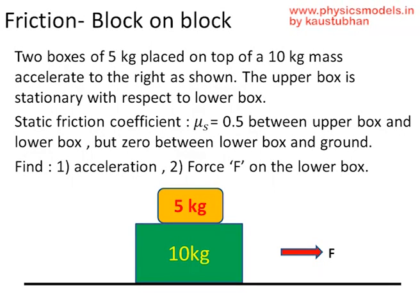In this video I'll explain a tricky problem involving Newton's laws of motion, free body diagrams and friction. We have the problem on screen: a box is sitting on another box and there is a force F pulling the lower box towards the right, dragging the upper box along with it. There is no relative motion between the upper and lower boxes, static friction is present, and there is zero friction between the lower box and the ground. We need to find the acceleration of the system and the force F on the lower box.